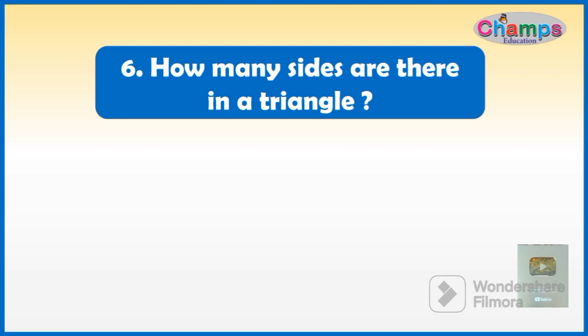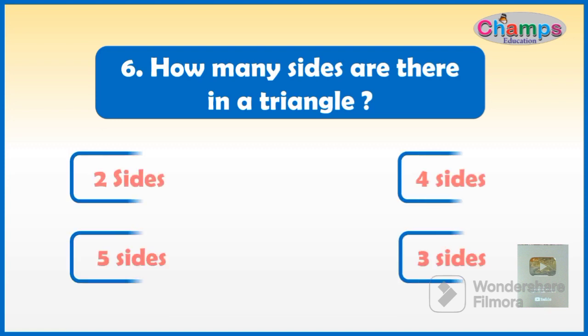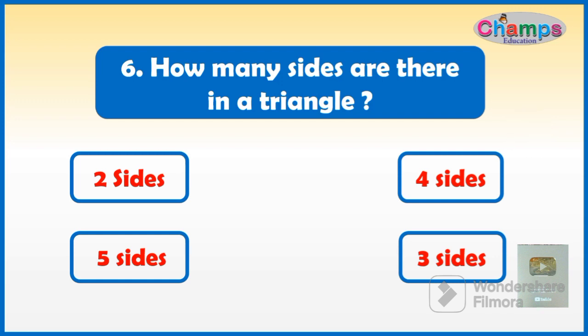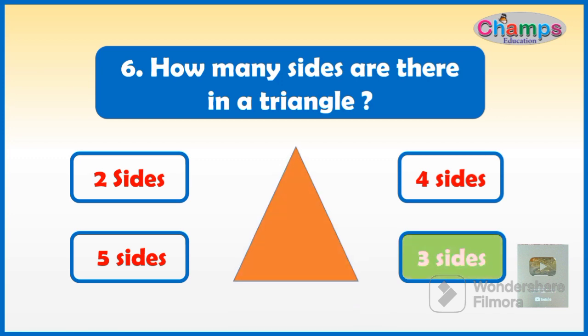How many sides are there in a triangle? Options: Two sides, Four sides, Five sides, or Three sides. And your time starts now. The correct answer is three sides.